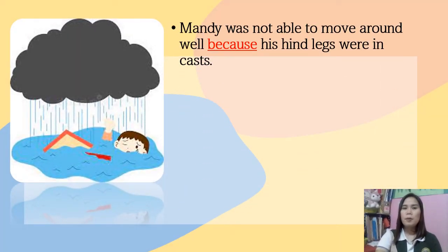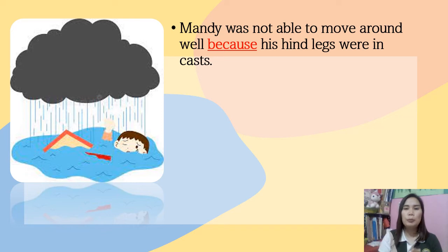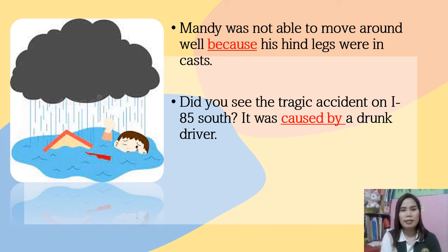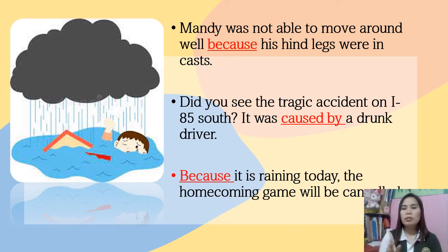Examples of cause and effect: 'Mandy was not able to move around well because his hind legs were in a cast' — the effect is that Mandy couldn't move, and the cause is his legs were in a cast. 'Did you see the tragic accident on I-85 South? It was caused by a drunk driver' — the drunk driver is the cause, the tragic accident is the effect. 'Because it is raining today, the homecoming game will be cancelled' — the rain is the cause, the cancelled game is the effect.